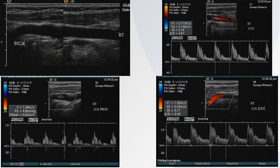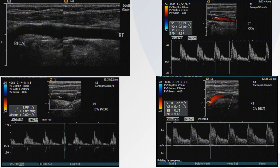How about another one? In the upper left we see a composite image of the right common and internal carotid artery. Upper right shows a spectrum from the distal right common carotid, lower left from the right proximal common, and lower right from a bit more distal in the right ICA. So what's the percent diameter reduction in the ICA? Zero percent? Less than 50? Greater than 50? Greater than 80? Don't know for sure — you've got to commit.